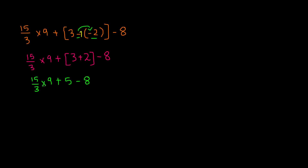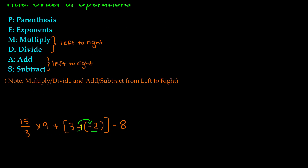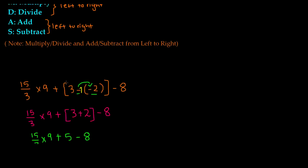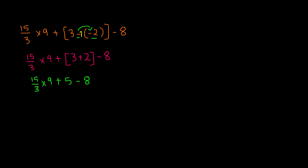Now we have multiplication, addition, and subtraction left. According to PEMDAS, the next thing we have to do is multiply or divide from left to right. We see that 15 is being divided by 3, so we do division first because it comes first from left to right. 15 divided by 3 is 5. Then bring everything else down: times 9 plus 5 minus 8. Next we do multiplication: 5 times 9 gives us 45, plus 5, minus 8.